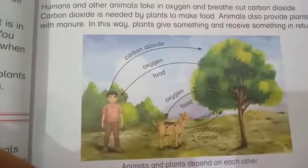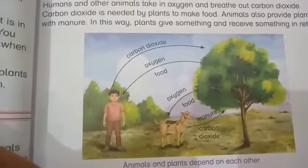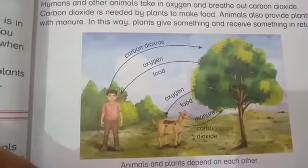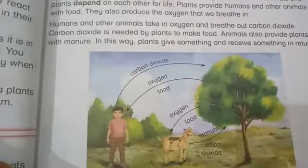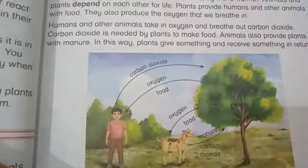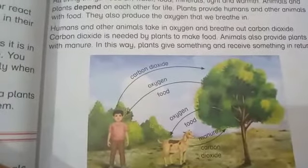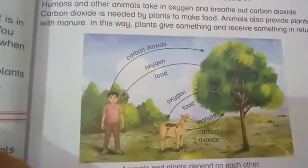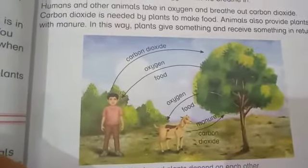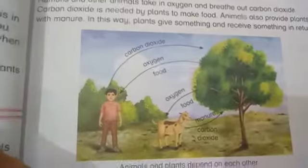That helps the plants to grow in a better way. In this way, plants give something and receive something in return, and this whole process shows the dependence of living things upon one another.